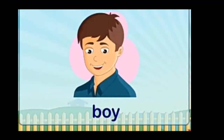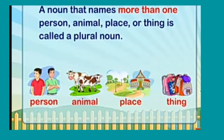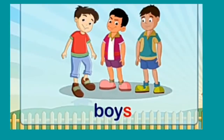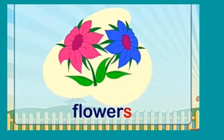More examples: boy, flower. A noun that names more than one person, animal, place, or thing is called a plural noun. Examples: boys, cats, flowers, animals, places, things.